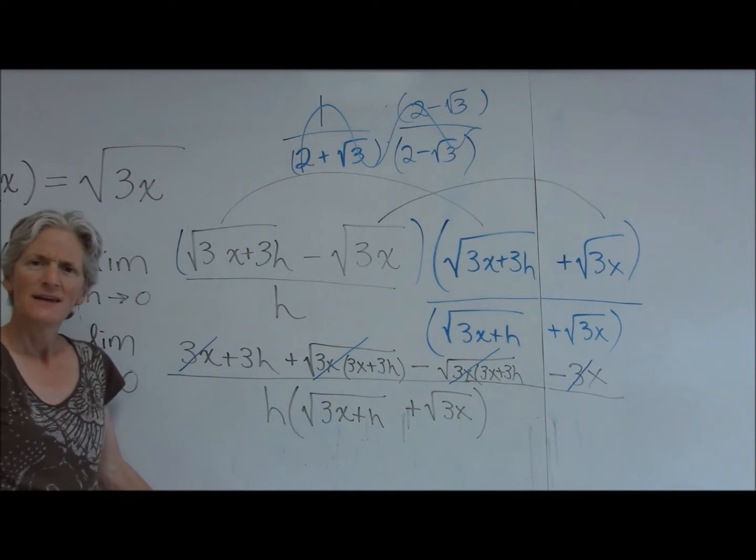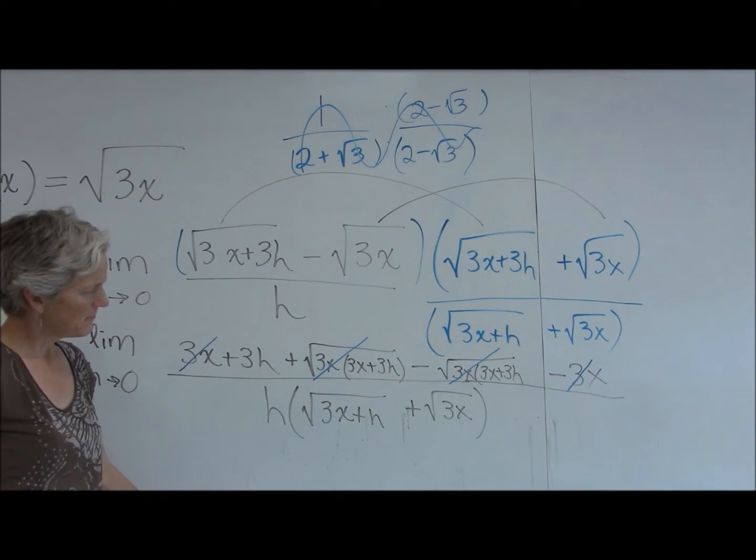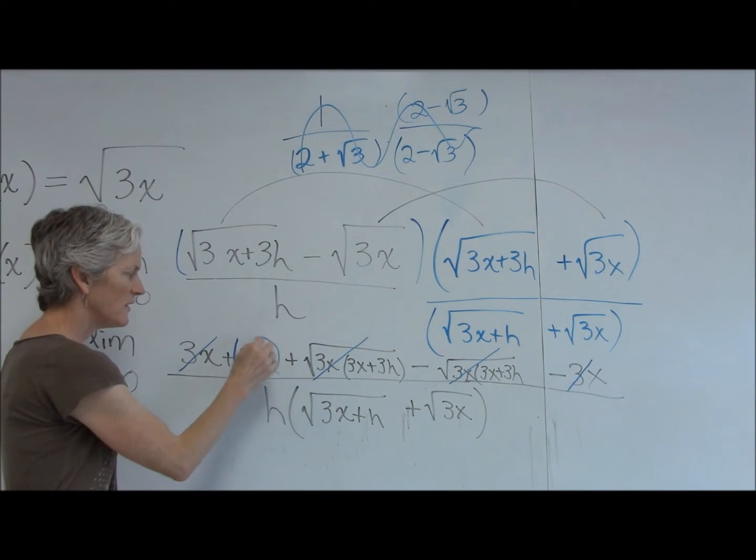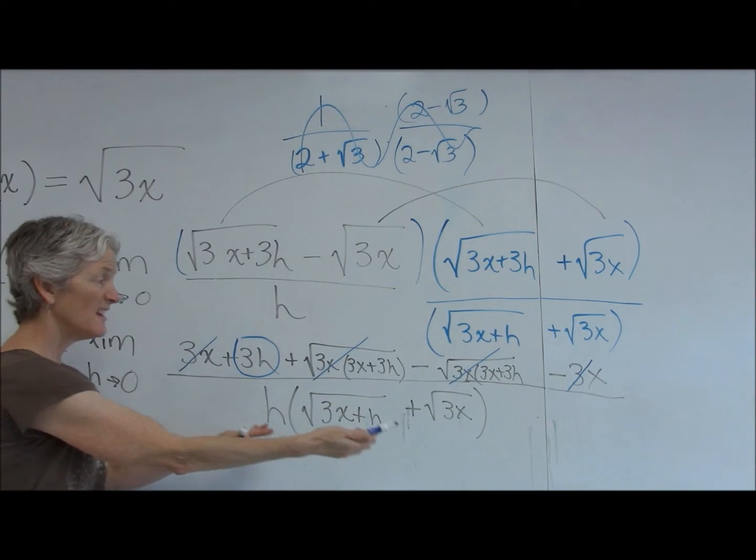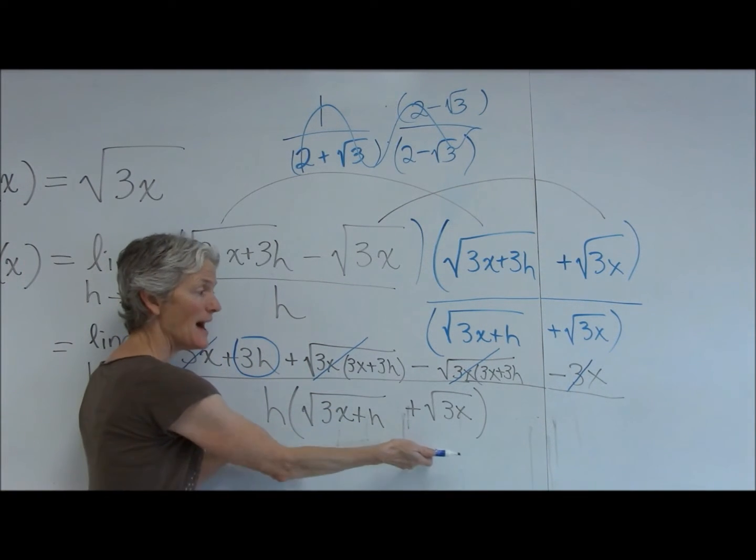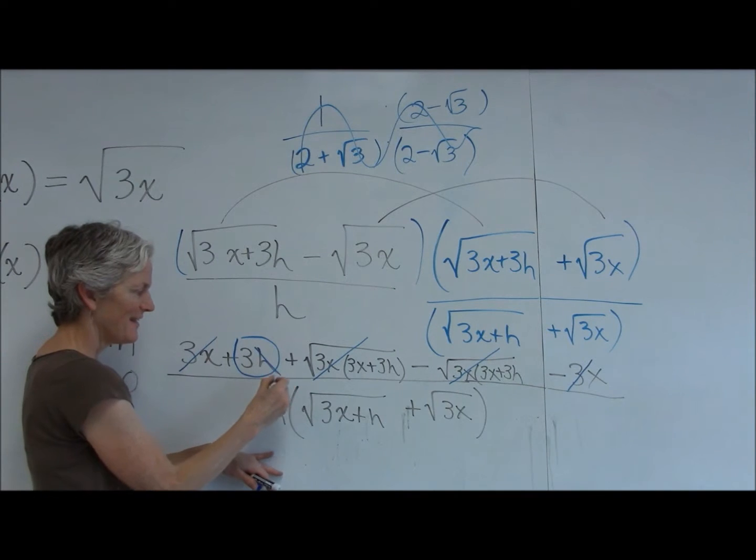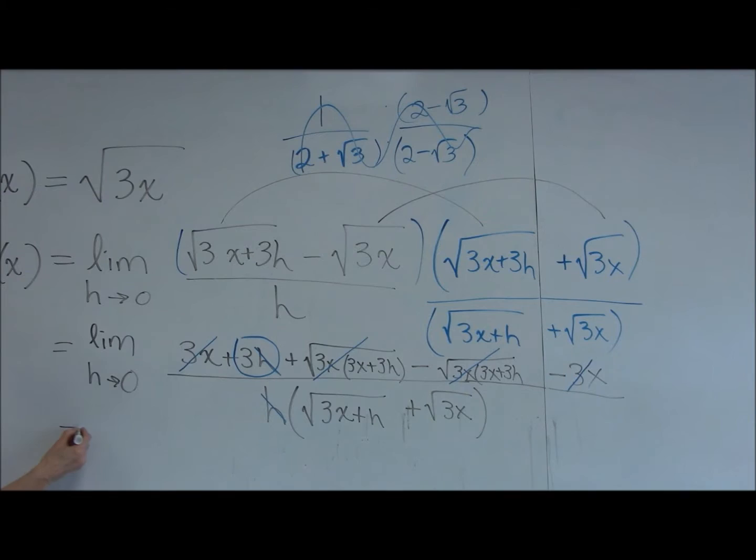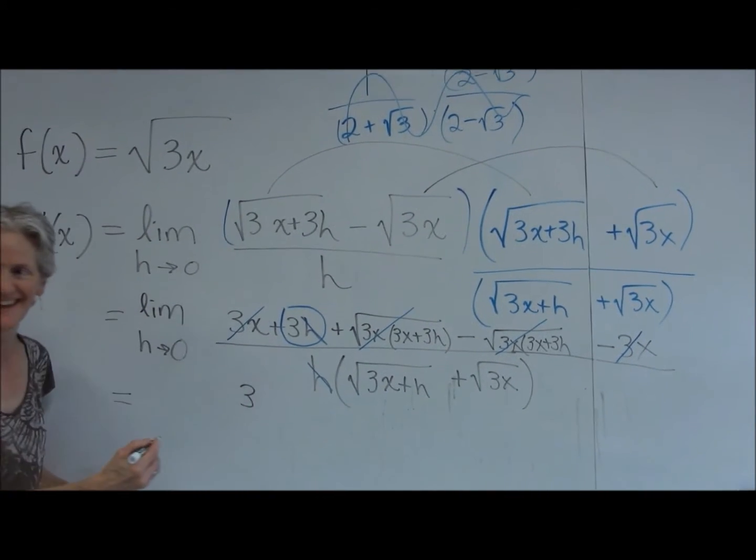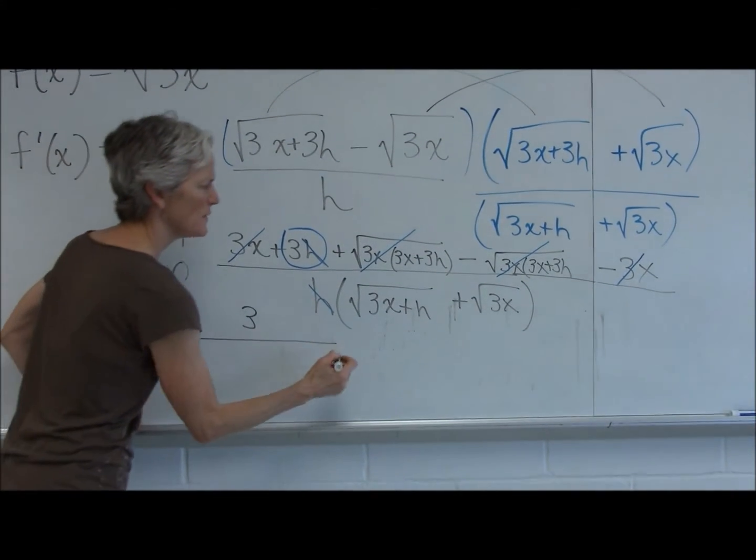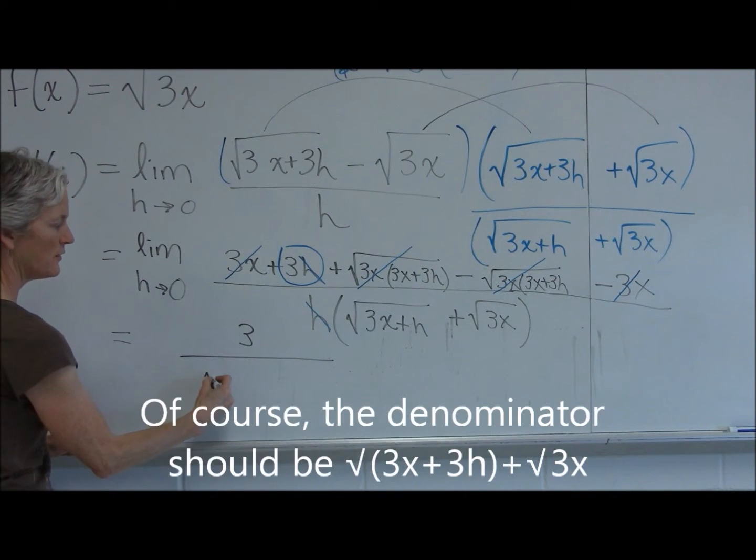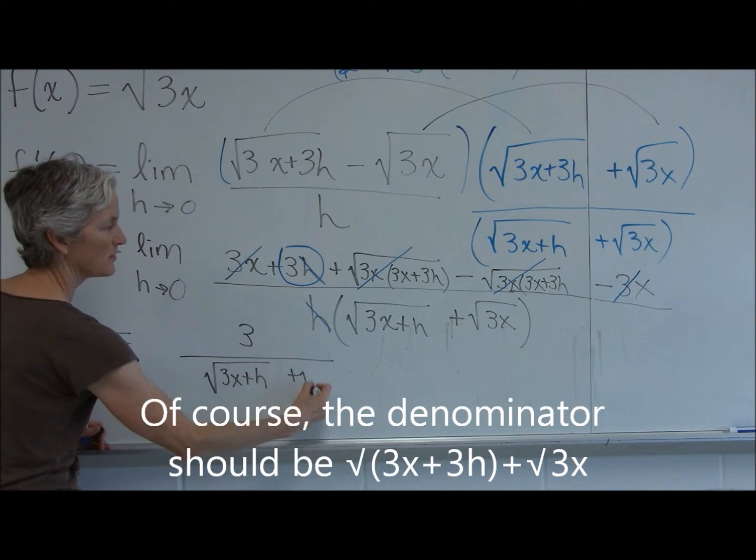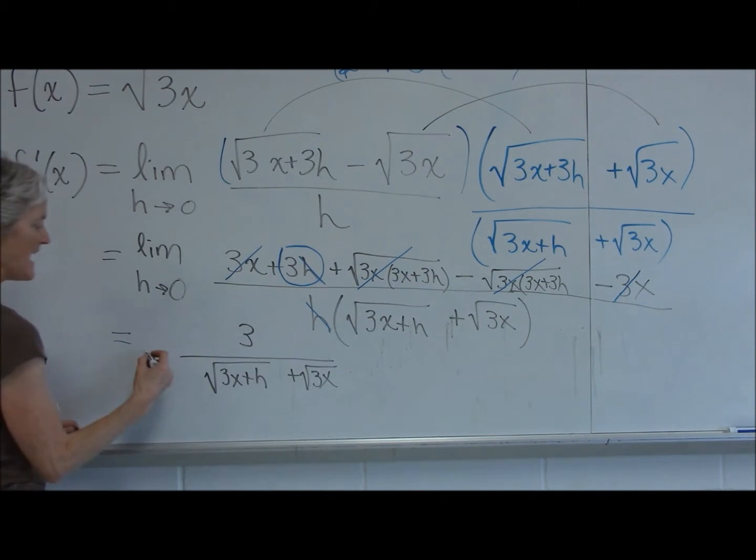Is that numerator, that 3h, is that the only thing left over? That's the only thing left over. Then, yeah. So I have one term in the numerator and one blob of things multiplied in the denominator. Those will become a 1. Divide away. That's fine. Okay. So I have 3 in the numerator. What do I have in the denominator? I have the square root of 3x plus h plus the square root of 3x. And I have the limit. Right. As h approaches 0.